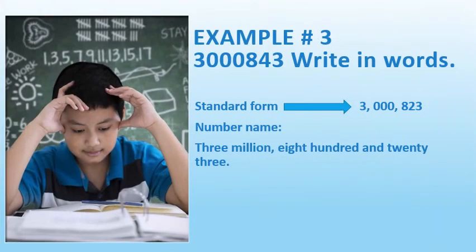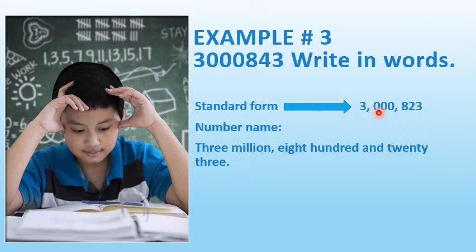Example three: write this number in words. First we write the number in standard form by inserting commas after every three digits from right to left. The number name is: three million, eight hundred and twenty-three thousand. Notice that we did not read the place value of zeros, but we did write them to show the place value.